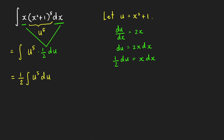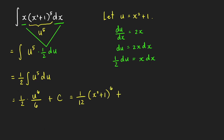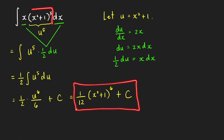We can now apply the power rule: add 1 to the power to get u raised to 6, divided by the new power 6, plus constant c. Writing back u in terms of x: one-half times one over 6 is one over 12, so the final answer is one over 12 times the quantity x squared plus 1, raised to the 6th power, plus c. You can check by differentiating this expression to recover x times the quantity x squared plus 1 raised to 5.